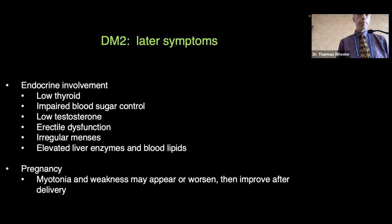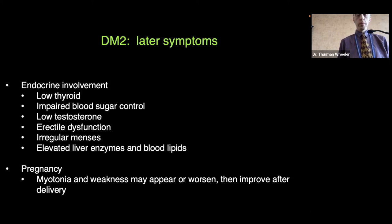In pregnancy, myotonia and weakness may appear or worsen and then improve after delivery of the baby. In some cases, the myotonia or weakness can appear for the very first time during pregnancy — someone can be asymptomatic before pregnancy, develop symptoms during pregnancy, and the symptoms can go away and stay away after delivery.